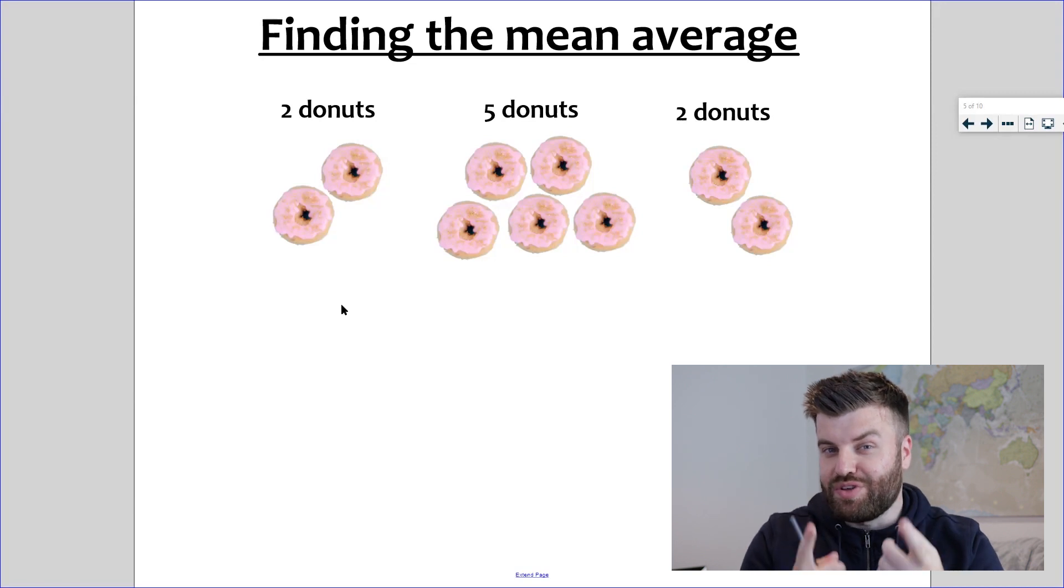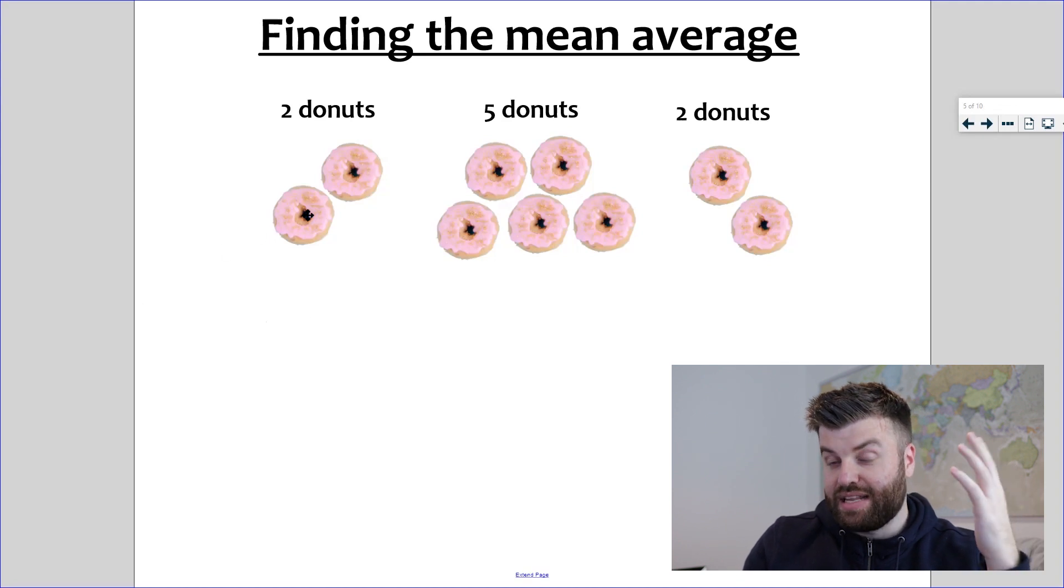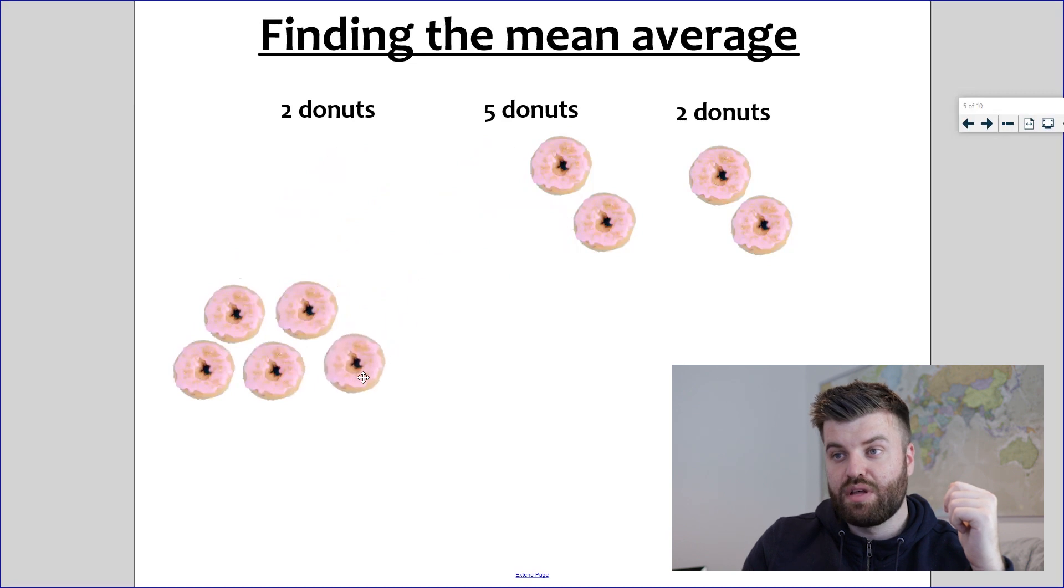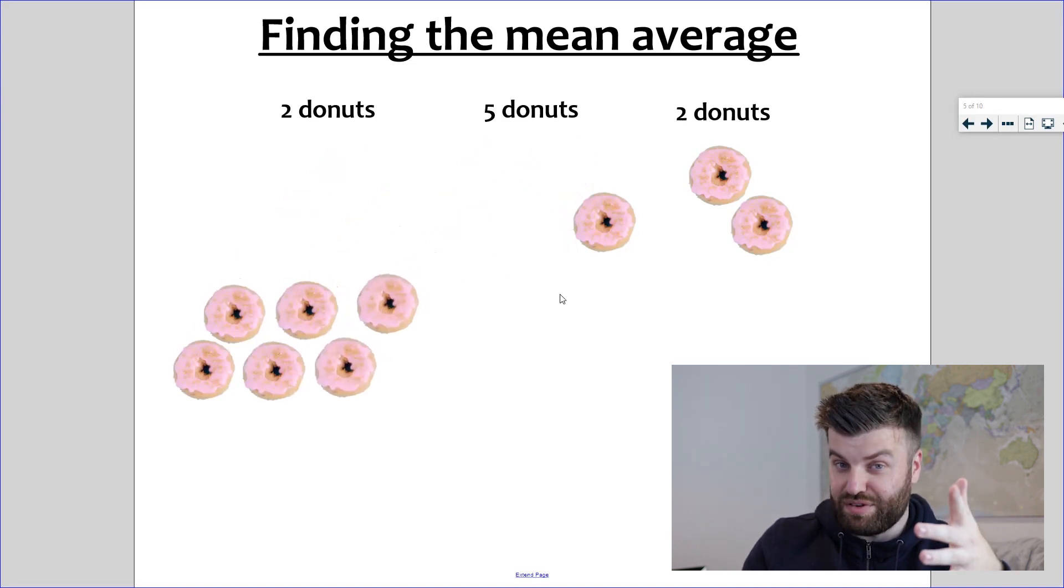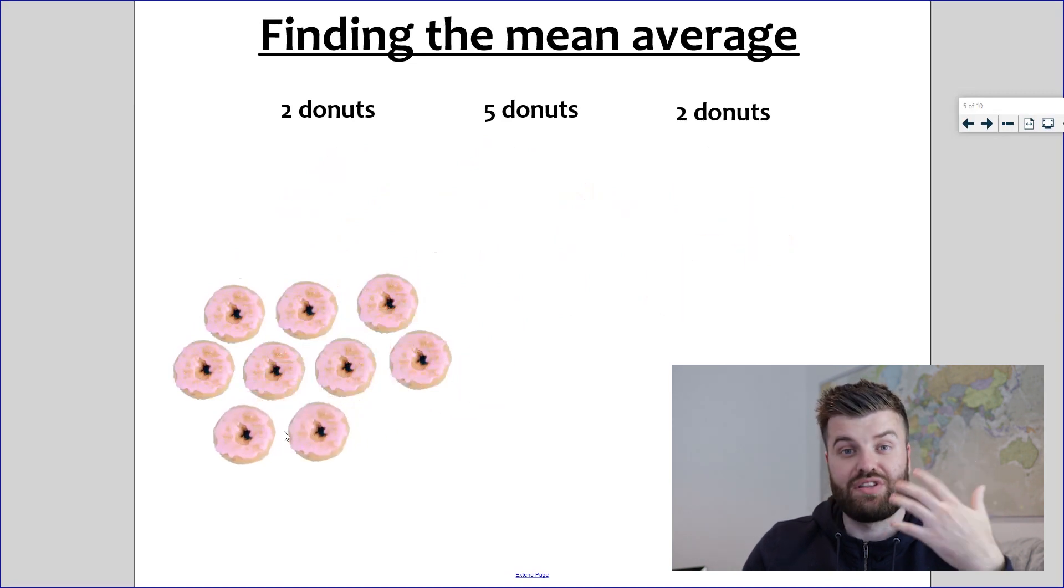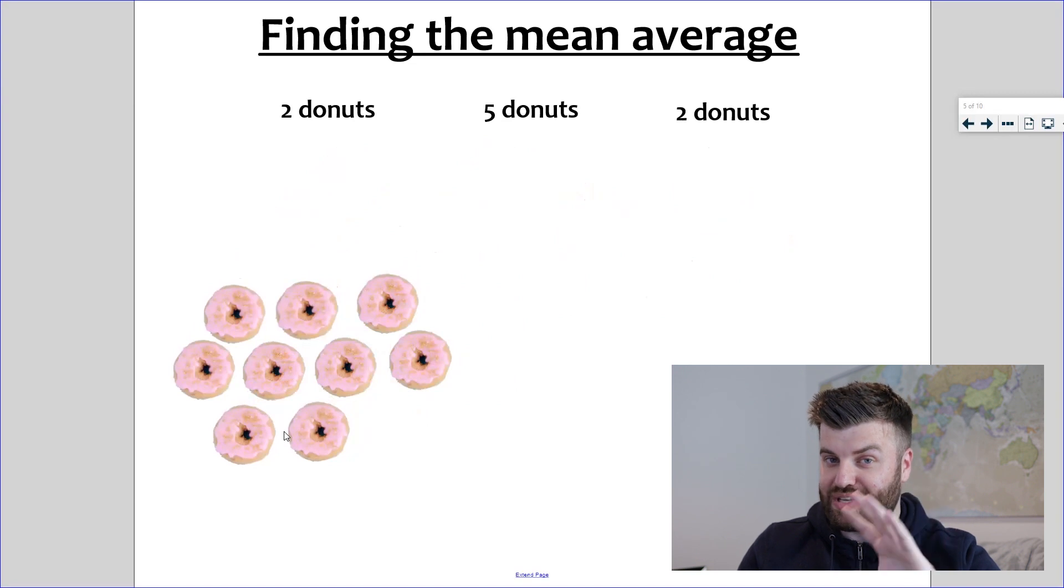Here's how you calculate the mean. What we do is we take all of the data, in this case all of the donuts, and we're going to put them all together. We're going to add them up. So we have two donuts that I drag down here. I'm going to take the five donuts and put them in the same pile, so two plus five is seven. Then I take the final two donuts, drag them down, and in total we have nine donuts. So that's step one: add up all of your data.